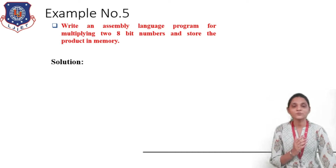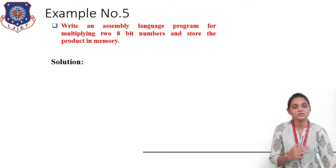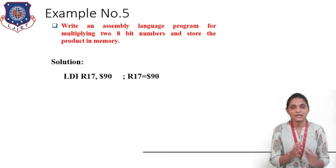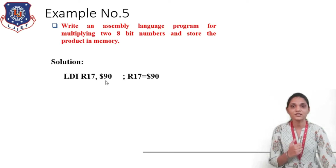In this, first we have to load the numbers inside some register and then we can use the MUL instruction to multiply the numbers. Then we have to store that result, which is already in register R0 and register R1, to some memory location. So first let us start with loading the numbers. For this we can use the LDI instruction, in which we use LDI, then some register, and the immediate data. This immediate data is going to be stored inside the register.